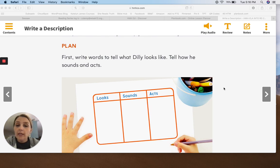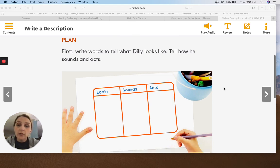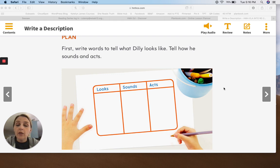On our first page where you see the three boxes, we're going to plan. First we're going to write words that tell what Dilly looks like. That's in the first box. Think about what color he is, what size he is. Then we're going to write words that tell how Dilly sounds. Go back and look at those speech bubbles that we looked at as we were reading the story.